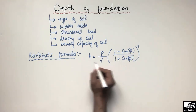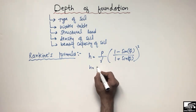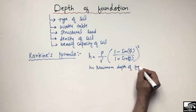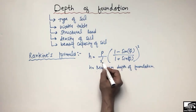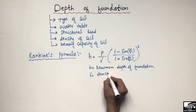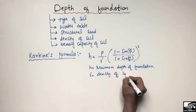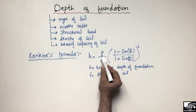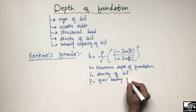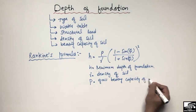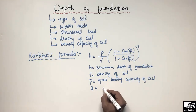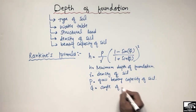In this formula, h is the minimum depth of foundation. Gamma is the density of soil. p is the gross bearing capacity of soil. And phi is the angle of repose of soil.